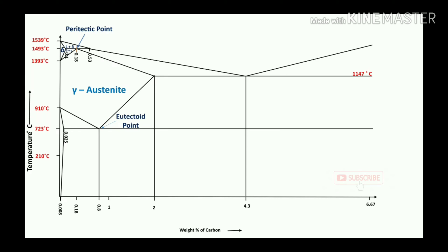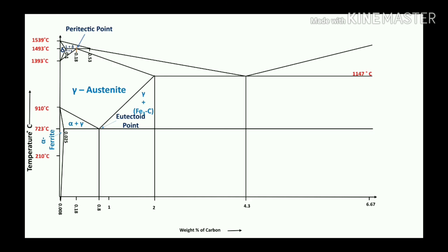At the eutectoid point — 0.8% carbon and 723°C — according to the solubility of carbon in iron at temperatures from 910 to 210°C and 0.025% carbon, it forms a single solid: alpha ferrite. So alpha ferrite plus gamma austenite on one hand, and gamma plus cementite on the other. Cementite is only formed after 0.8% carbon. At exactly 0.8% carbon — the eutectoid steel — it forms only pearlite. Before that: alpha ferrite plus pearlite; after 0.8%: pearlite plus cementite (Fe₃C).